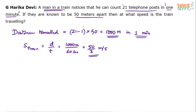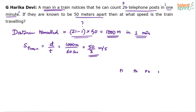The whole question is: how do we get this 1000 meters? What is the logic behind 21 minus 1 into 50? For easy understanding, instead of 21, let's say there are 5 poles — P1, P2, P3, P4, and P5.